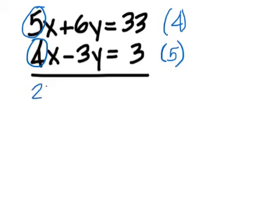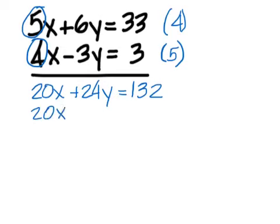And when you do that, on the top, you get 20x plus 24y equals 132. And on the bottom, it's 20x minus 15y equals 15.